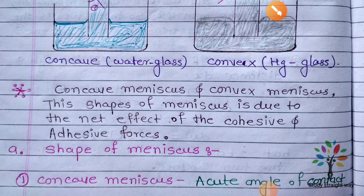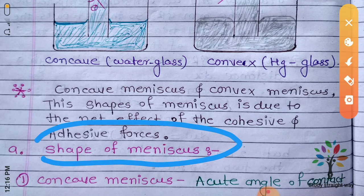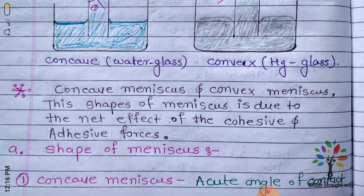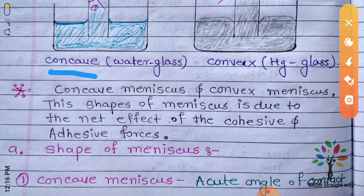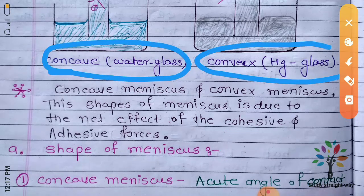Hello and welcome to SS class. Students, today we will discuss the shape of meniscus topic. We have a concave shape in the case of water and glass, and we have a convex shape in the case of mercury and glass.